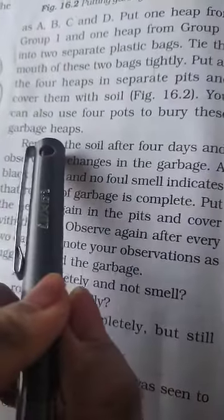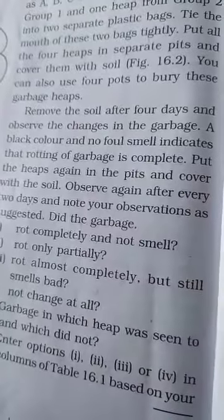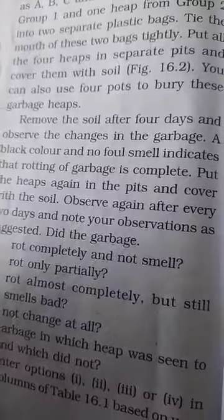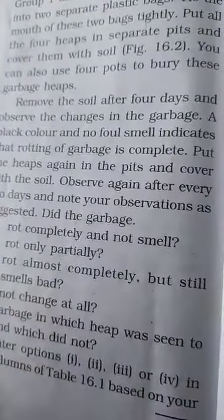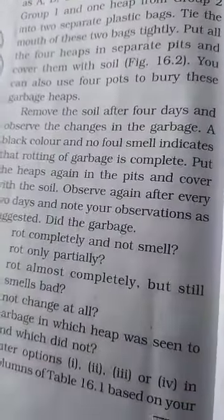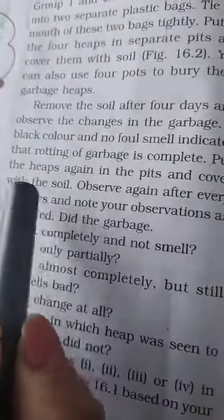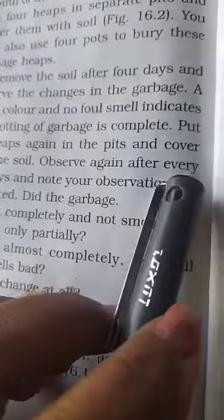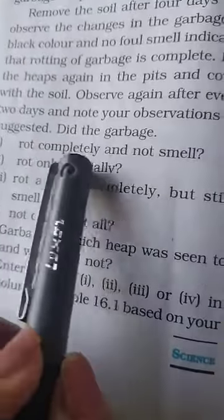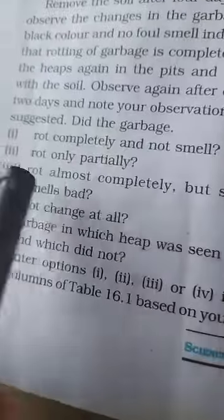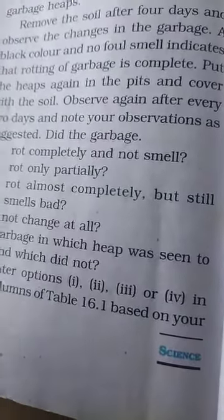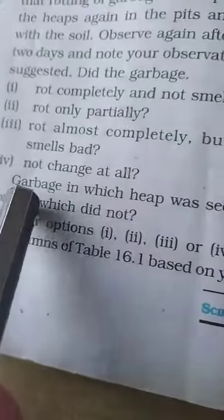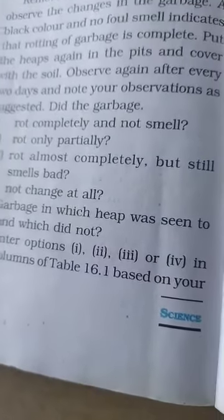You can use four pots to bury the garbage heaps. A black color and no foul smell indicates that rotting of garbage has occurred. If there is black color and no smell, it means the garbage is rotting. Put the heap again in the pit and cover with soil. Observe again after a few days and note your observations — whether it has rotted completely, rotted only partially, rotted but still smells, or shows no change at all.